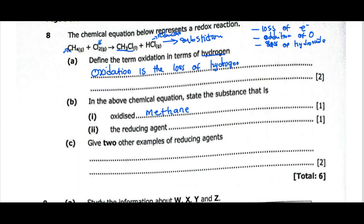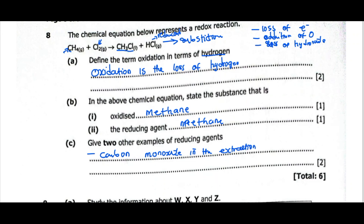The substance that is oxidized is also the reducing agent. So methane is the reducing agent, because chlorine was reduced — it gained an atom of hydrogen — and what caused chlorine to gain was the presence of methane. Give two other examples of reducing agents. Carbon monoxide is a reducing agent — for example, in the extraction of iron, we use carbon monoxide as the reducing agent. The other one is carbon, used in the extraction of zinc.